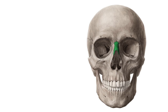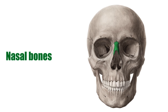The nasal bones are a pair of bones that sit at the roof of the face, between the right and left halves of the maxilla, and create the initial contour of the nose known as the bridge of the nose. The superior part of the nasal bones articulates with the frontal bone.